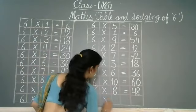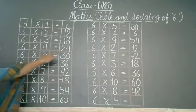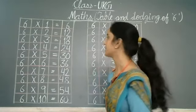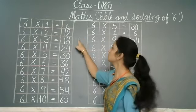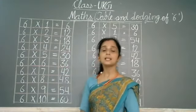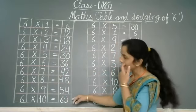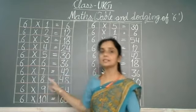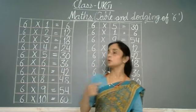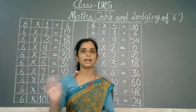Next: 6 cross 4 is equal — 6 fours are 24. Repeat the table of 6 once more with me: 6 ones are 6, 6 twos are 12, 6 threes are 18, 6 fours are 24, 6 fives are 30, 6 sixes are 36, 6 sevens are 42, 6 eights are 48, 6 nines are 54, 6 tens are 60. You need to write this table of 6 two times, learn it, and then do the dodging and learn that too. Learn it well. Bye, take care.